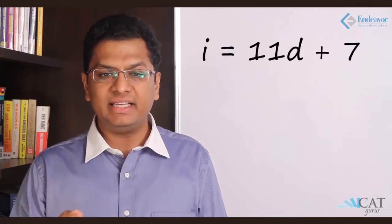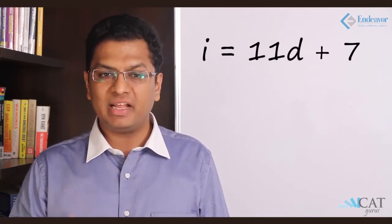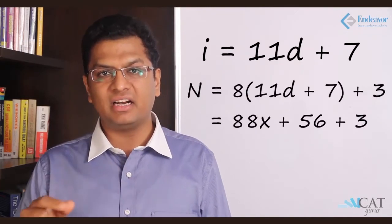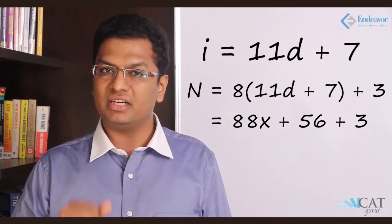As we discussed, let us work backwards. Let us start with 11. So we do not know what the quotient is. Let us assume that the quotient is d. So 11 into d plus the remainder 7, that becomes the inner number. If we multiply this by 8, so 8 bracket start 11d plus 7 plus 3 will give me the original number.